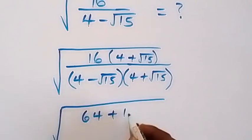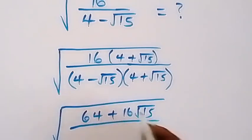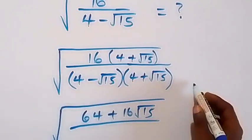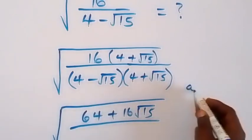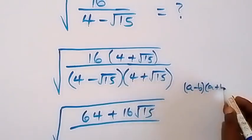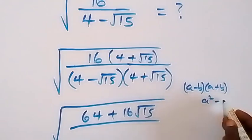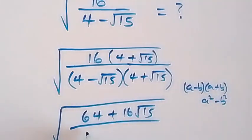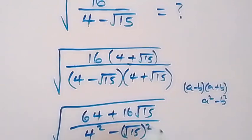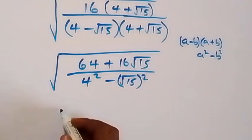Then plus 16 root 15, divided by what we have here. This follows the difference of squares: when we have (a minus b) times (a plus b), this can be written as a squared minus b squared. So here we have 4 squared minus root 15 squared.